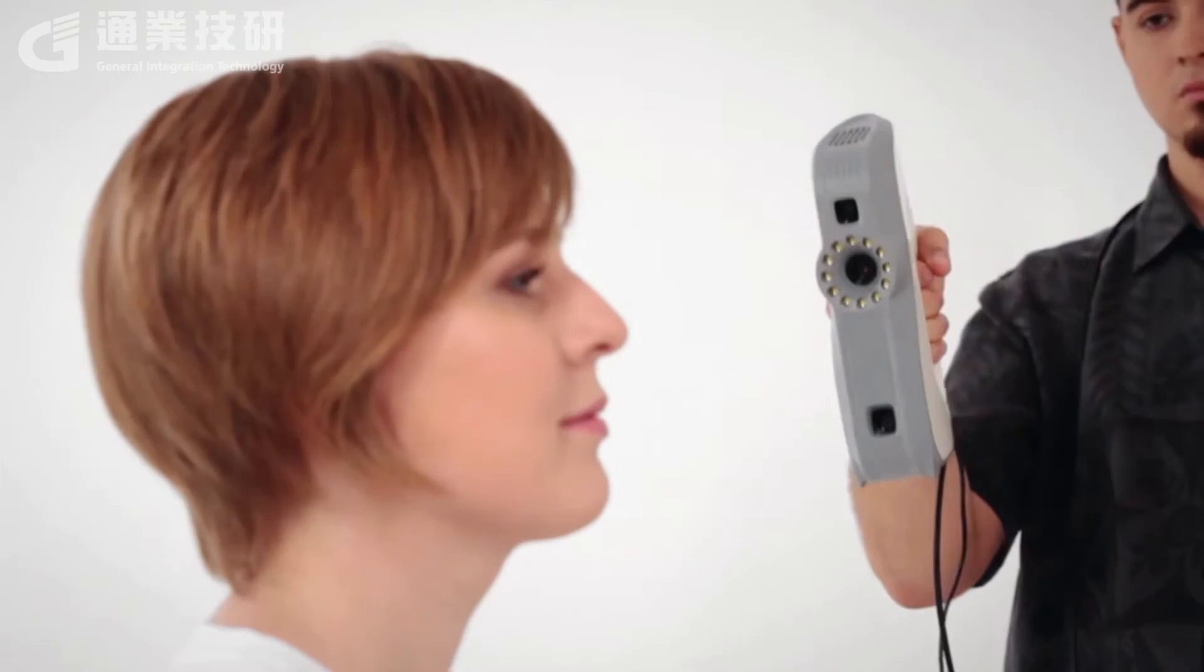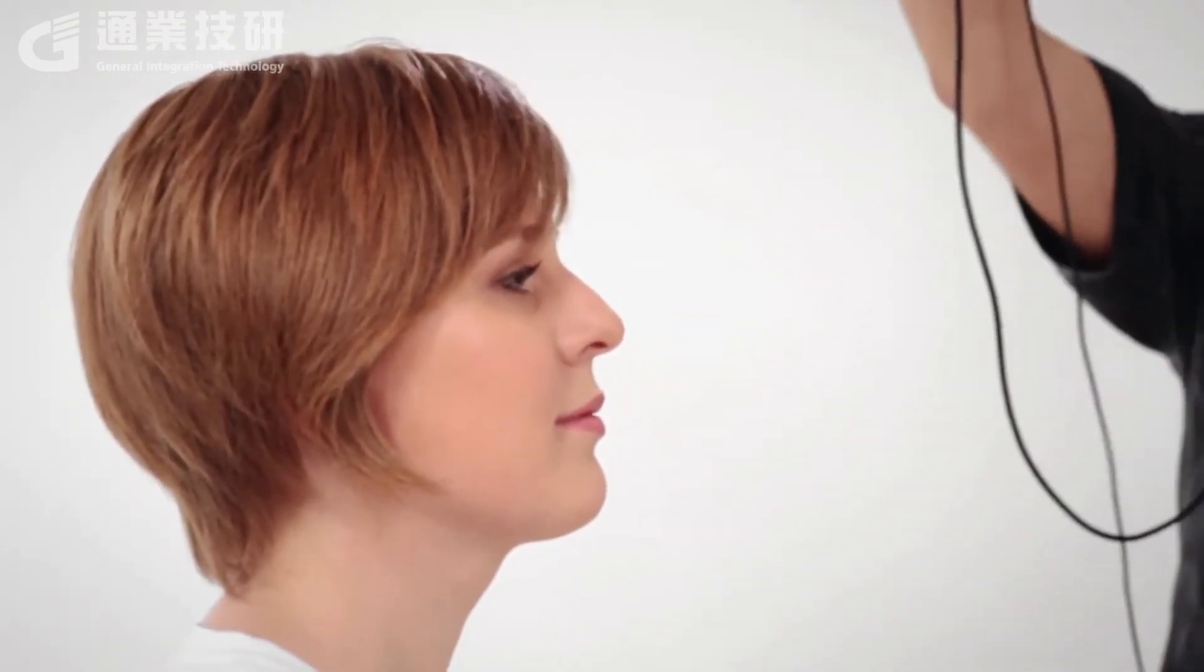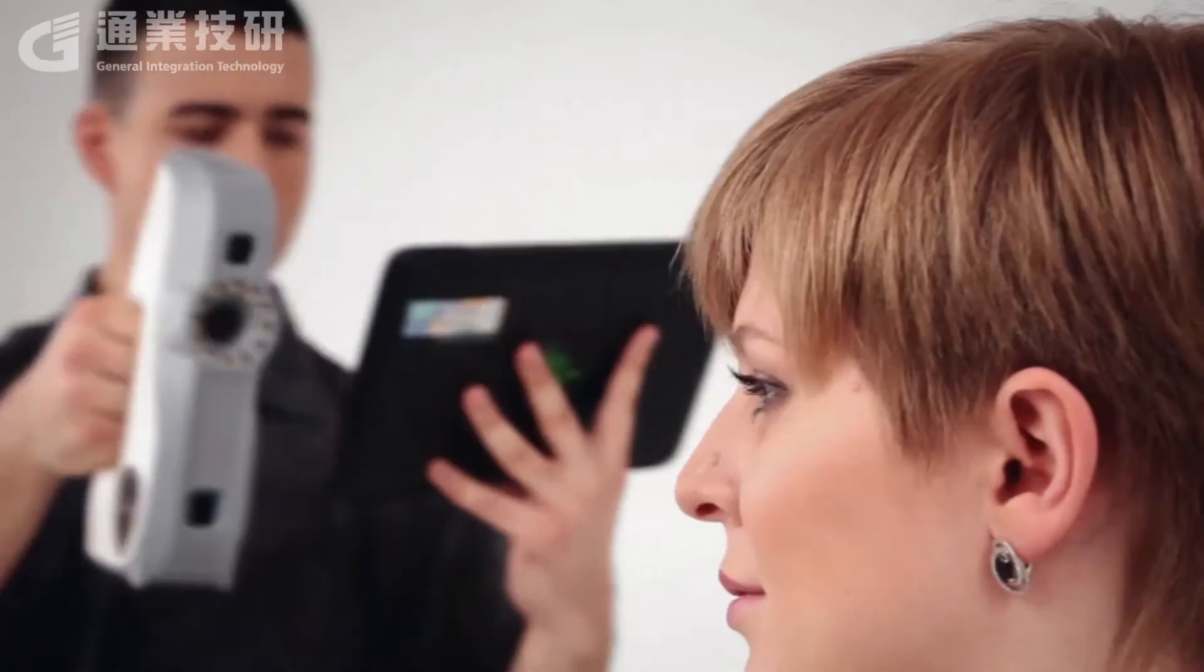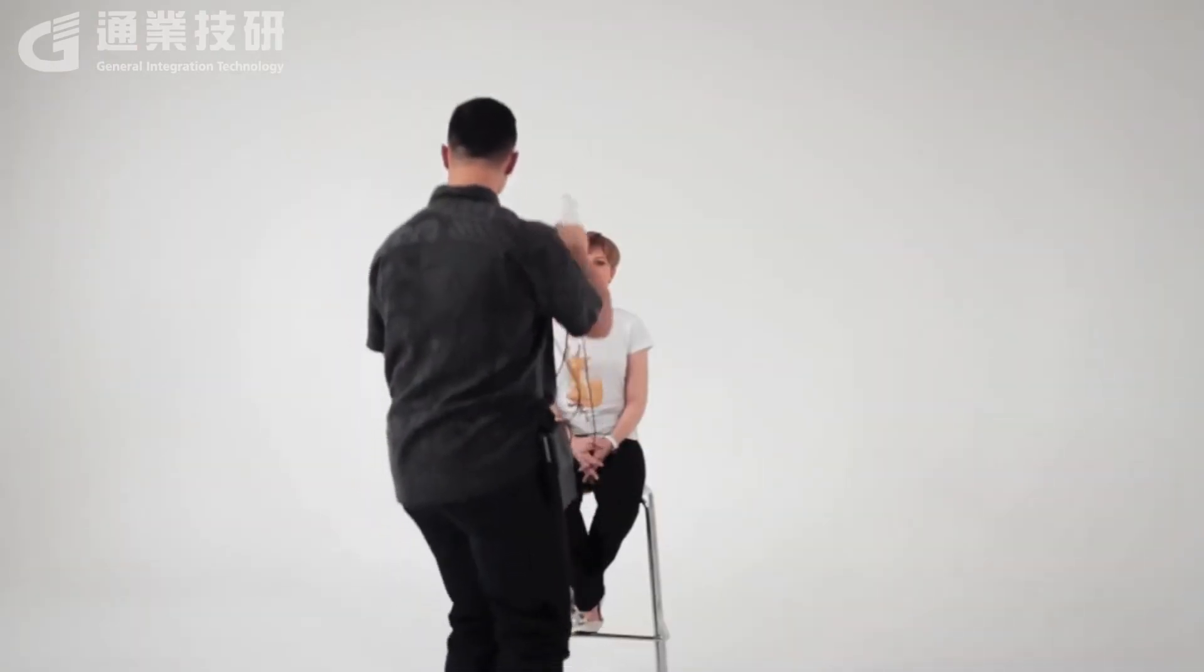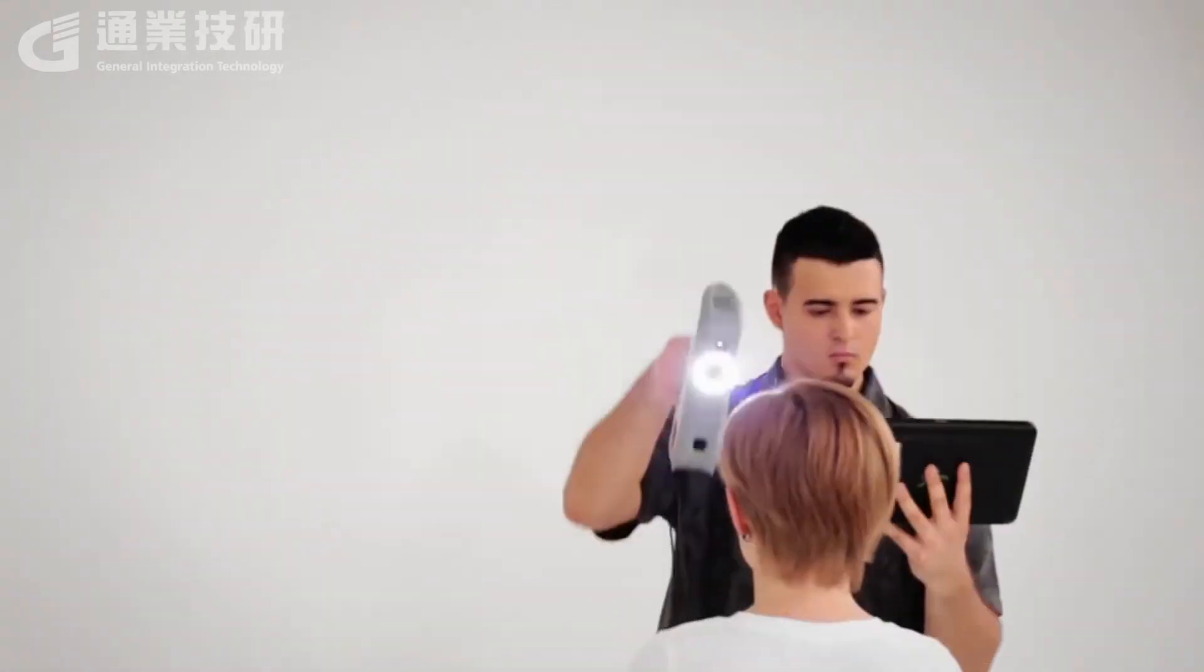The optimal trajectory for scanning the face quickly and effectively is as follows. Start scanning from the ear to the nose. Lower the scanner to capture the chin from below. Then raise it to scan the area above the forehead.